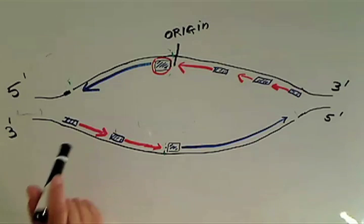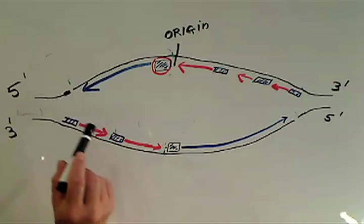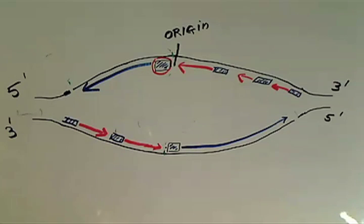The lagging strand is much more complicated. It involves the same enzymes but it's much more complex. There's a primer that's put down and DNA replication adds bases, but the bases are added backward, so it constantly has to be started, finished, sealed, started, finished, sealed.